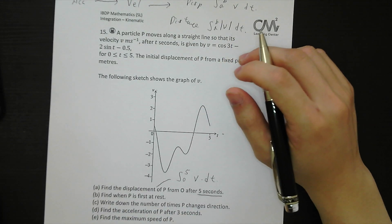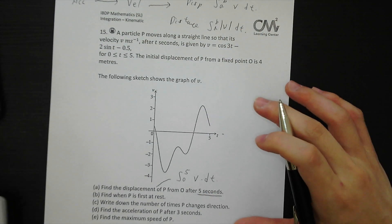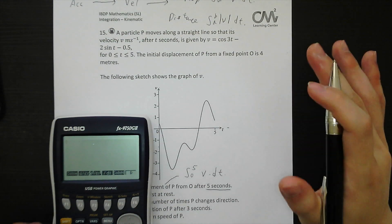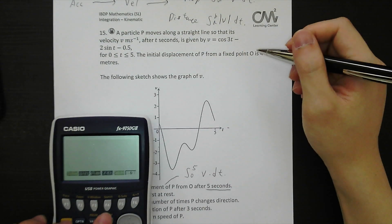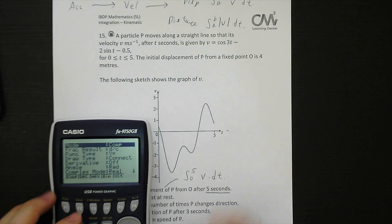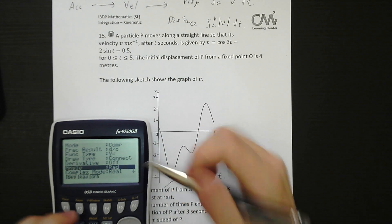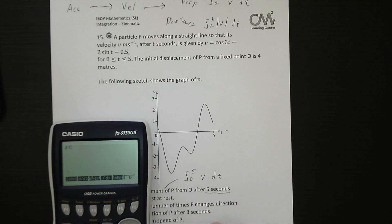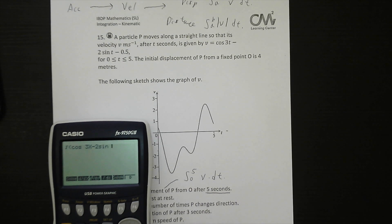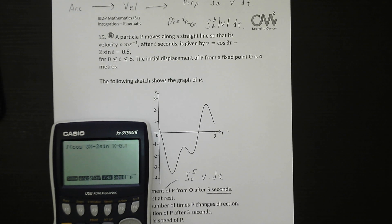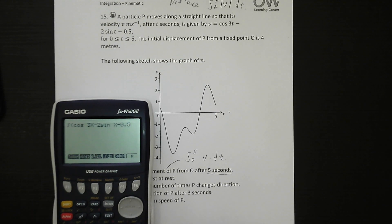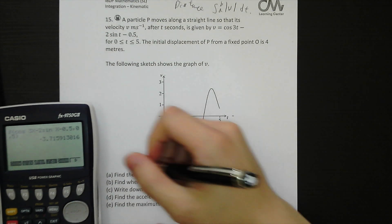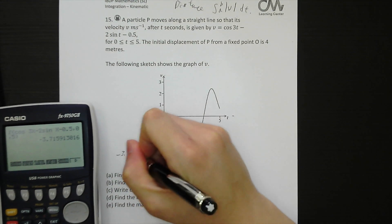It's a paper 2 question so we can use the calculator to do it. This calculator is in radian because it's a trig function. Option, calc, integrations. And then the boundary is from 0 to 5.